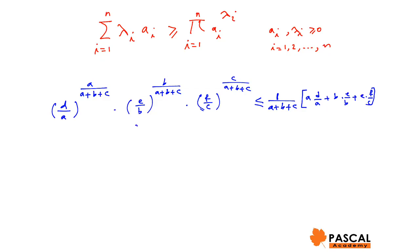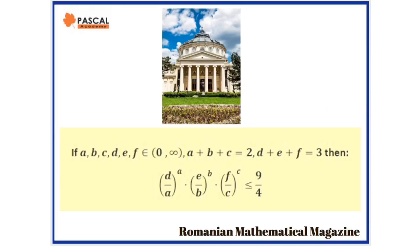Which simplifies to (d plus e plus f) over (a plus b plus c). We know d plus e plus f equals 3 and a plus b plus c equals 2.